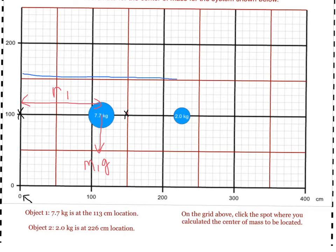Then, for object 2, we do the exact same procedure. Here, radius 2, mass 2, gravity. Multiply them together.